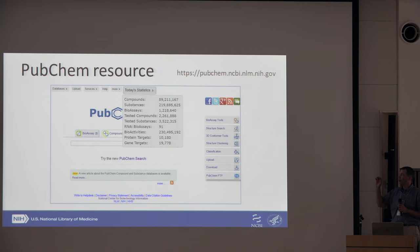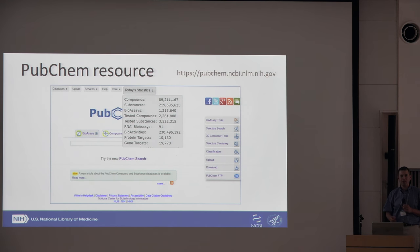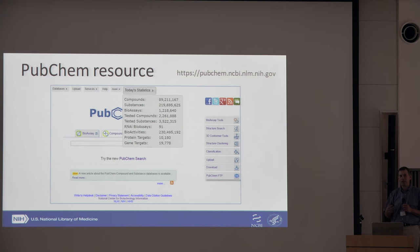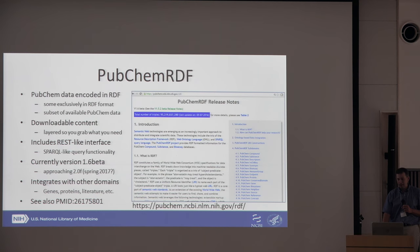We're talking about things in the tens of millions, hundreds of millions, and we contain billions upon billions of links. We're trying to create a semantic representation of this type of content, and we do this through the PubChem RDF resource.